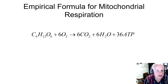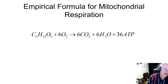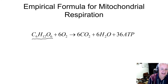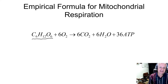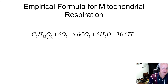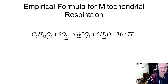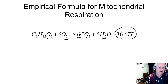This is the general empirical formula for respiration. A couple of things to note. First, glucose is the primary reactant. Glucose, produced by photosynthesis, in the presence of oxygen is oxidized to produce carbon dioxide, water, and ATP.